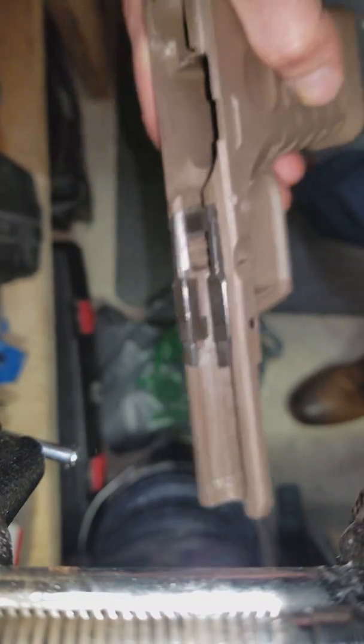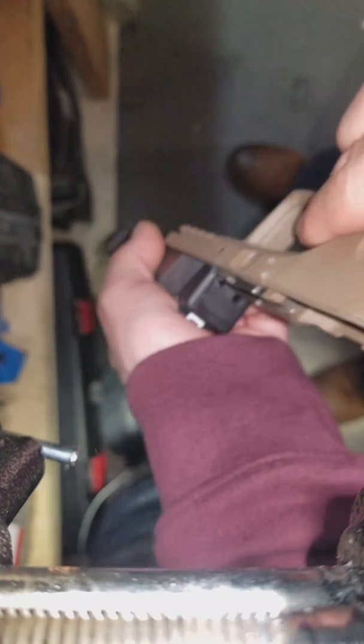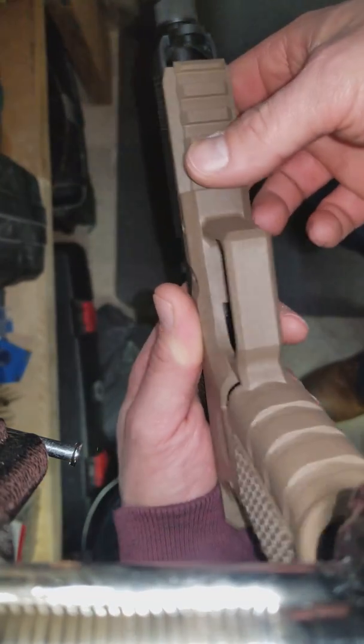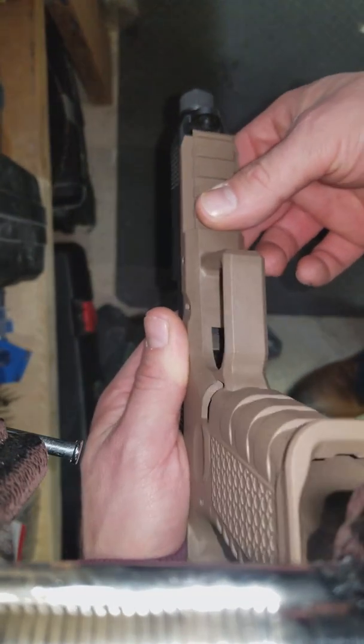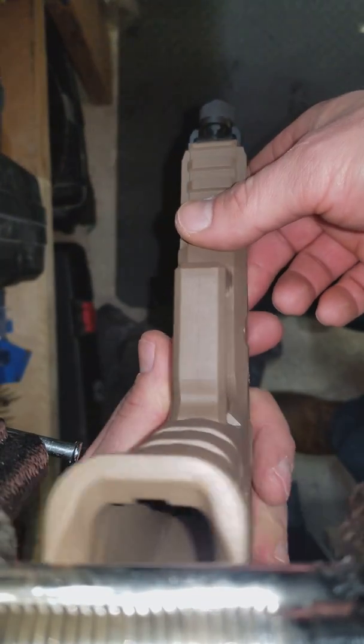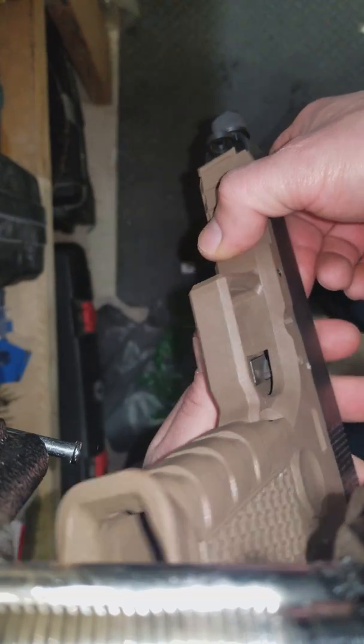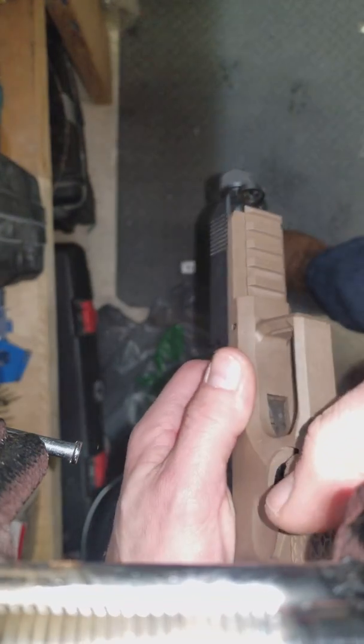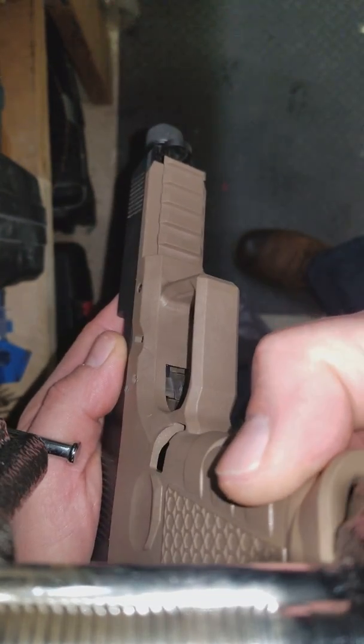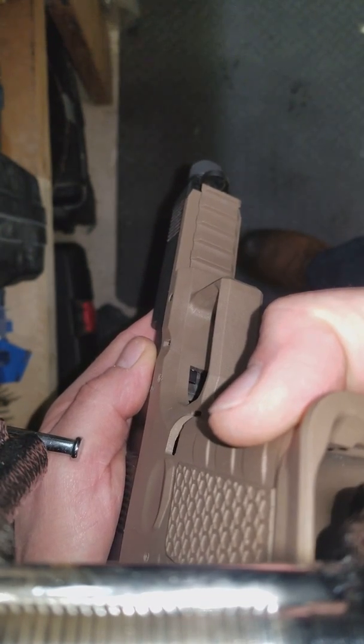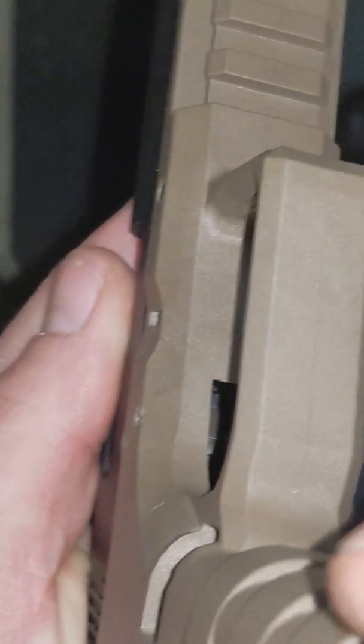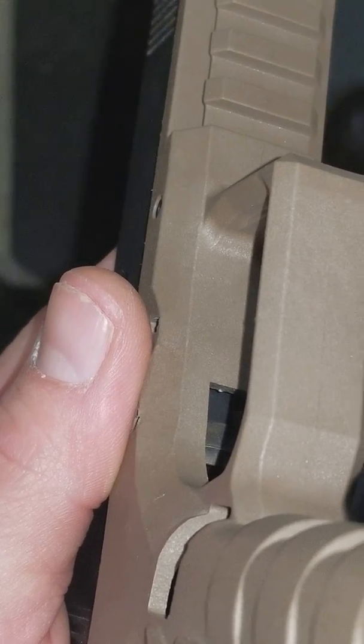This is my original version 1, so I'm going to show you. You can't see it. Let's see if I can zoom in. So there's the locking block, there's the furthest part of the barrel towards the rear of the pistol.